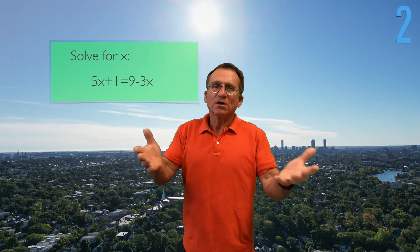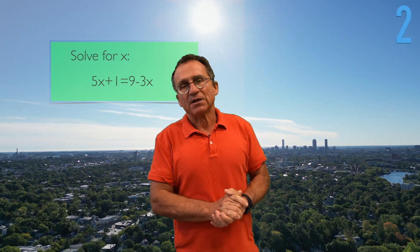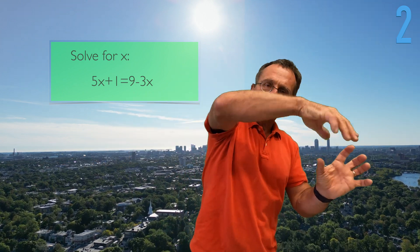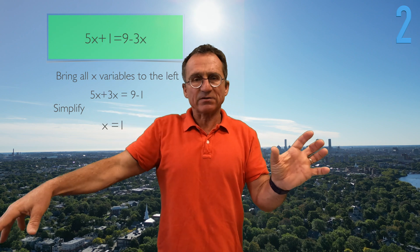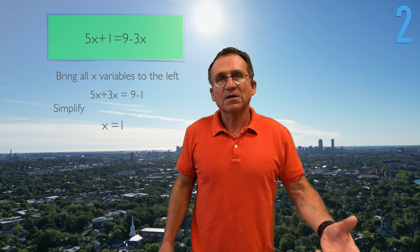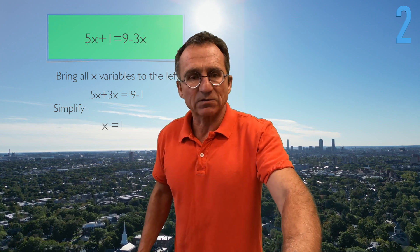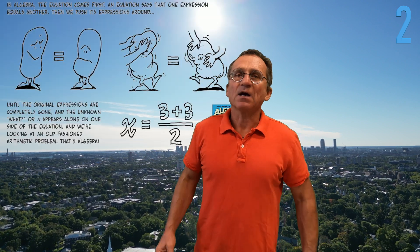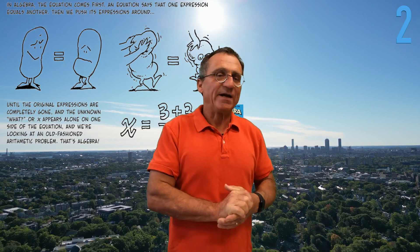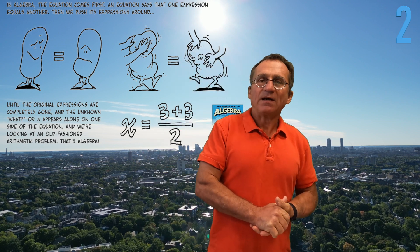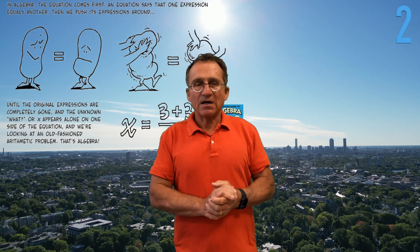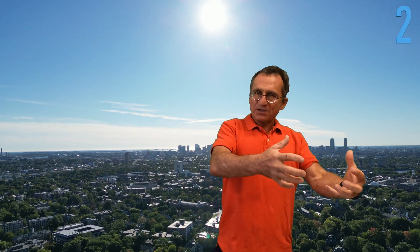Here is an example of a linear equation where x appears on both sides. What we do is move the x to one side and all other things to the other side, and we see 8x equals 8, so the solution is x equal to 1. We have to manipulate these expressions until only x appears on one side.